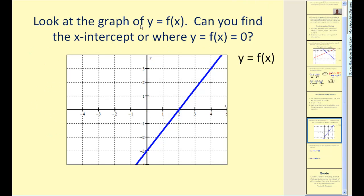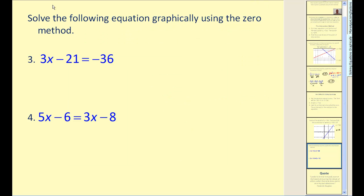Look at the graph of y = f(x). Can you find the x-intercept, or where f(x) = 0? The line crosses the x-axis at x = 2, so the solution would be x = 2. With the intersection method we look for a point of intersection; with the zero method we look for the x-intercept. Let's take a look at a couple examples of this method.